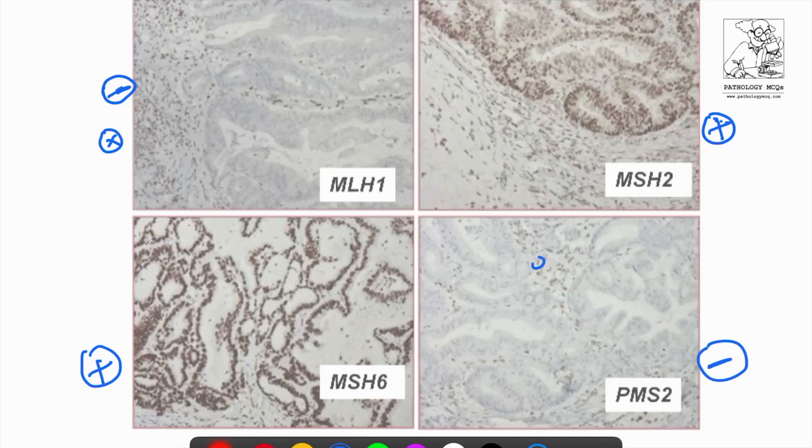This is again positive and PMS2 is negative. You can see in the surrounding stroma, then these cells show positivity. We have to identify the expression in the tumor cells and not the stromal cells. Stromal cells can be used as an internal control. In this case, you can see that MLH1 is negative and PMS2 is negative. So what is the next best step? The next best step is to do a BRAF V600E mutational analysis. This is the next best according to the algorithm we just discussed.